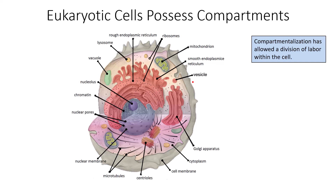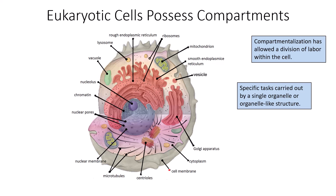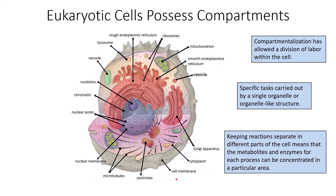A variety of other cellular structures are compartmentalized and are produced in order to function in a particular way. Specific tasks carried out by a single organelle or an organelle-like structure is the specific function of that particular compartment. Keeping reactions separate in different parts of the cell means that the metabolites and the enzymes for each process can be concentrated in a particular area. The mitochondria is a compartment that allows all of the enzymes that are necessary to function within the Krebs cycle, specifically to function within the prep step or the transition link reaction to function correctly. It allows the enzymes necessary to produce ATP like ATP synthase to function correctly, and there are a variety of other enzymatic reactions that take place in a variety of other compartments that need to be separated from other enzymatic reactions so that they don't compete with each other or impede on their ability to produce the function that they are designed to produce.